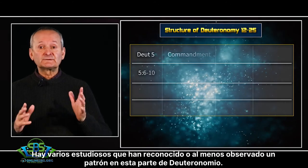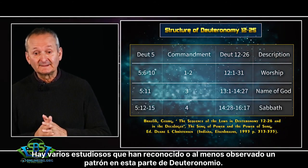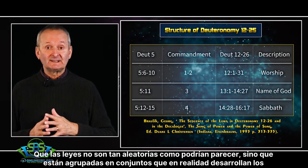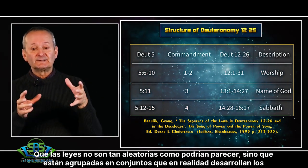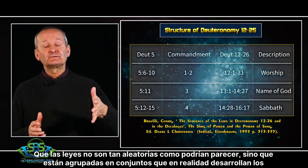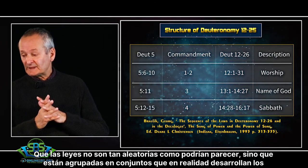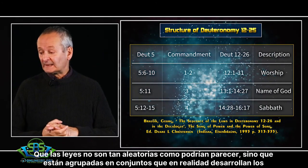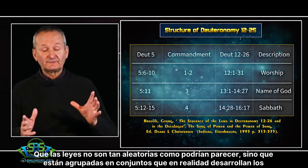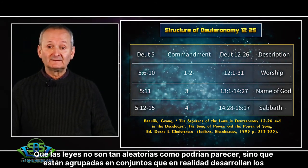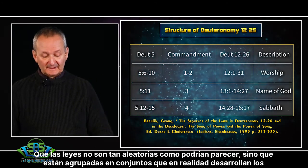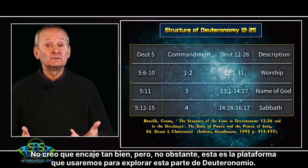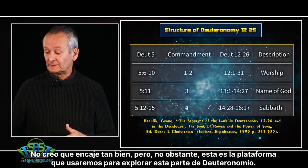A number of scholars have recognised a pattern in this part of Deuteronomy — that the laws aren't as random as they may seem, but rather they're grouped together in clusters that are actually unpacking the different commandments. On the screen you'll see a table with this particular structure. Looking at it, I think particularly for the first commandments this fits pretty well, though for some of the later commandments it doesn't fit quite as well. Nonetheless, this is the platform we will use to explore this part of Deuteronomy.